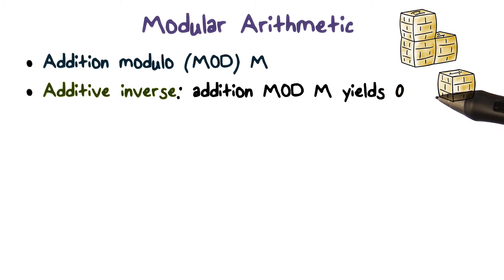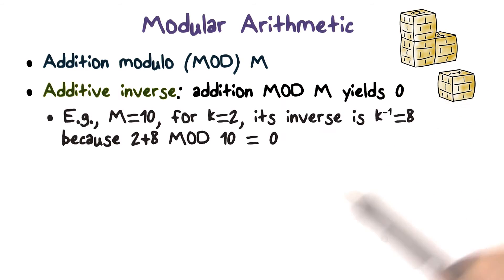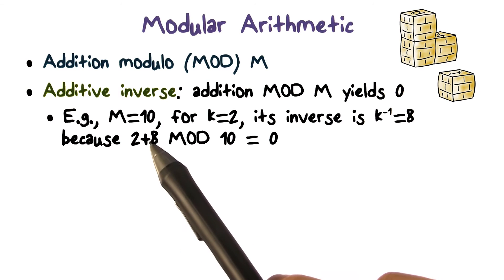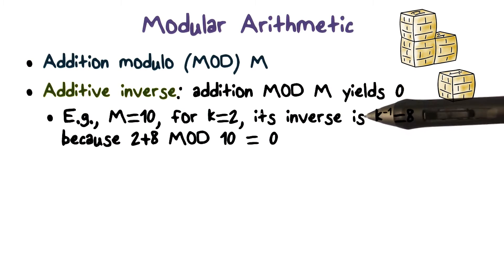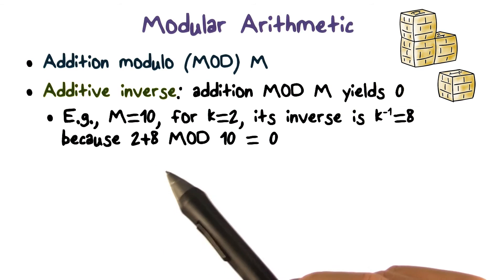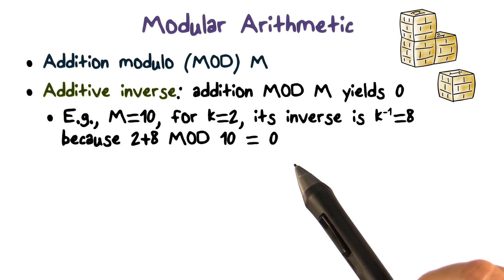In modular addition, if we add a number and its inverse, then the result is 0. For example, if the modulus is 10, then for k = 2, its inverse is 8, because 2 plus 8 mod 10 = 0.